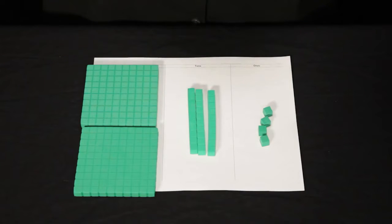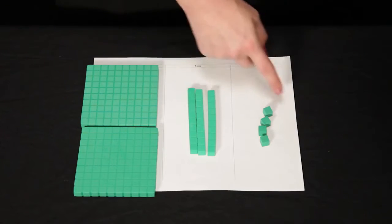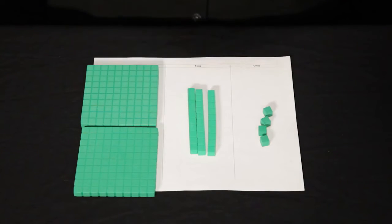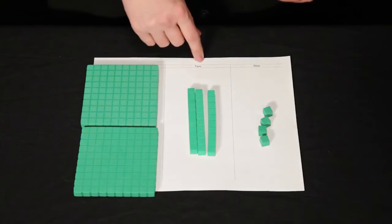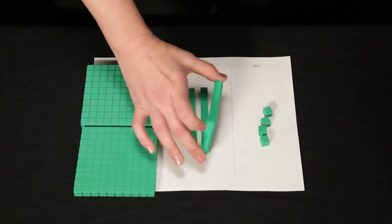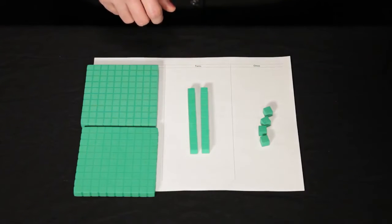I'm going to start in the ones column. I need to take away 8 ones. I look here in the ones column and I see that I don't have 8 ones to take away. So I can regroup. I will regroup 1 ten for 10 ones.